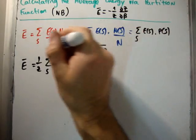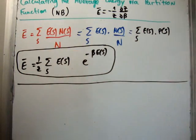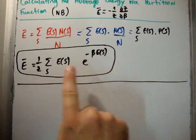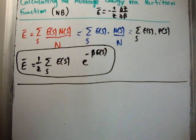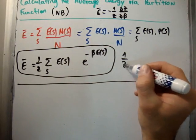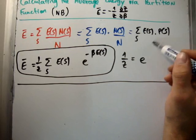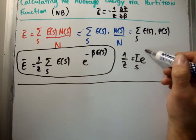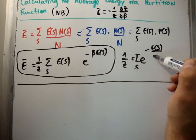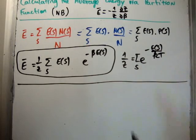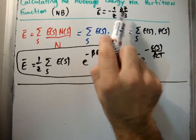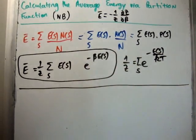So we said that this is the average energy of our system. Now what I'm going to show you is that we can calculate this from the partition function. So let's say z is equal to the sum over s, e to the minus E of s over kt. And I'm going to show you that you can get the average energy by looking at this particular formula here. So let's go ahead and do that.